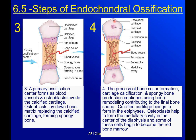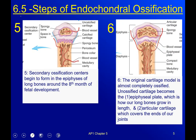We have bone — not cartilage, except for the articular cartilage — on the ends of our long bones, so we need to replace the epiphyses with bone as well. Osteoclasts help form the medullary cavity in the center of the diaphysis, and some cells begin to become red bone marrow. As a child we have quite a bit of red bone marrow because we're mass producing blood cells; as we get older it gets replaced by yellow bone marrow.